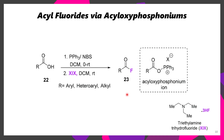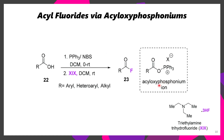Another way to make acyl fluorides is through the treatment of triphenylphosphine with N-bromosuccinimide, forming a bromotriphenylphosphonium cation. This is able to be attacked by the corresponding carboxylate, making an acyl oxyphosphonium ion, which can then be reacted with HF in the form of triethylamine tri-HF to afford the corresponding acyl fluoride.